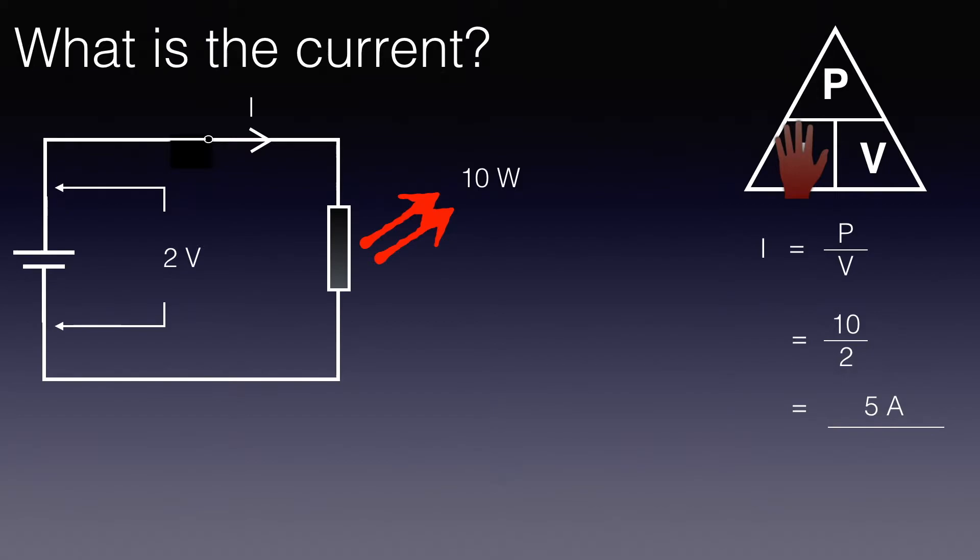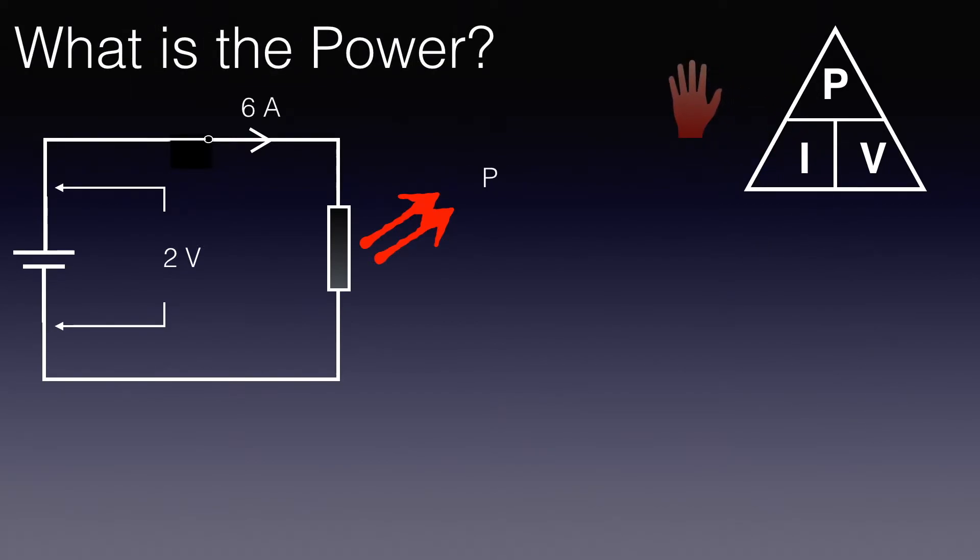Let's have a look at one more example. In this circuit we're given the current and the voltage. What is the power being dissipated? Well we cover up P, that's the unknown, and we get P equals IV. Now you notice here that I've dropped using the multiplication sign. I didn't write P equals I times V. That's quite a common way of doing it. Sometimes dotted notation is used and it would be P equals I dot V. But this is taken and generally accepted to mean P equals I times V. So P equals IV or I times V, and in this case it's 6 amps times 2 volts, so it's 12 watts. And note again the capital W for watts because it's after James Watt, the person.